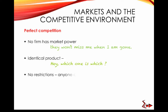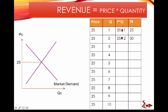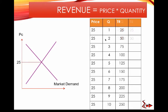Revenue equals price times quantity. If the market price is $25, and you sell one unit, total revenue is 25 × 1 = $25. If you sell two units at $25 each, total revenue is 25 × 2 = $50. Continuing this pattern gives total revenues of 25 × 375, 25 × 400, and so on — this is how you calculate total revenue for the firm.